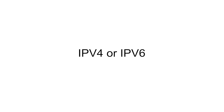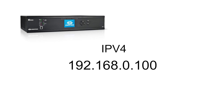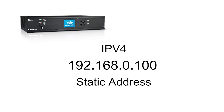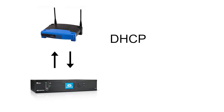An IP address can be either IPv4 or IPv6. Commonly, we use IPv4 addressing, where four decimal numbers separated by dots represent the address — for example, 192.168.0.100. IP addresses can be fixed on the device directly, which is called a static address, or assigned automatically by a device in the network. This automatic addressing is called DHCP, which stands for Dynamic Host Configuration Protocol, and requires a DHCP server.